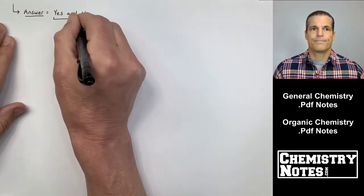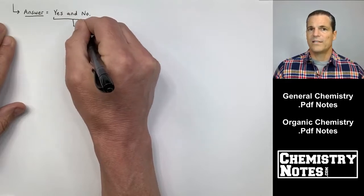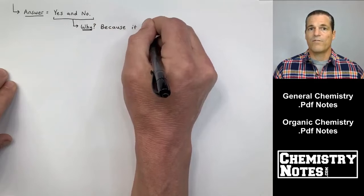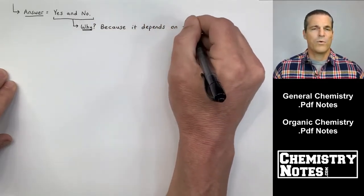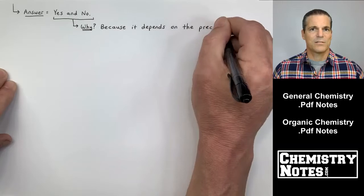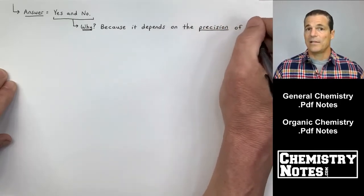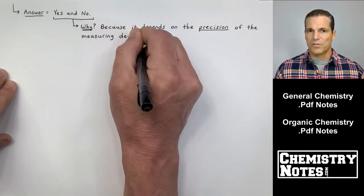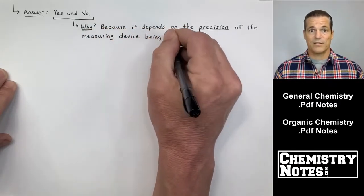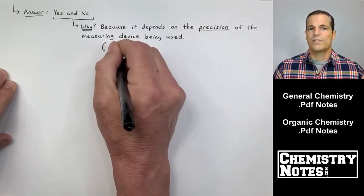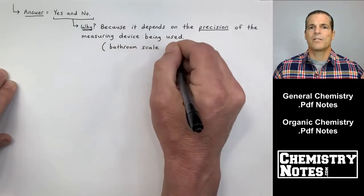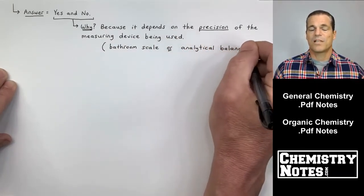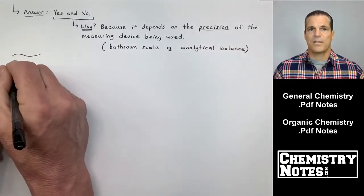So, the answer is, do these two grapefruits weigh the same? Yes and no. Why is it yes and no? Well, if you look at the first measurement on the bathroom scale, 1.5 pounds was the answer to both. We only went as far right as the tenths place, one decimal place. Whereas, the analytical balance, it recorded the weight with much more precision, three decimal places. So, why is my answer yes and no? Because it depends on the precision of the measuring device or the instrument being used. Bathroom scale is not as precise as the analytical balance.